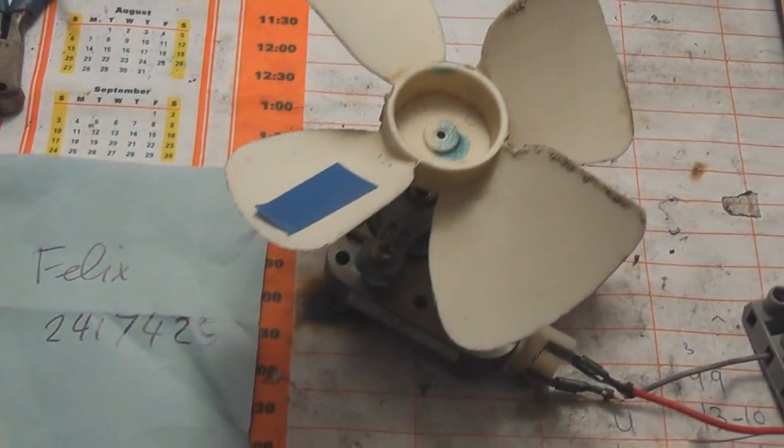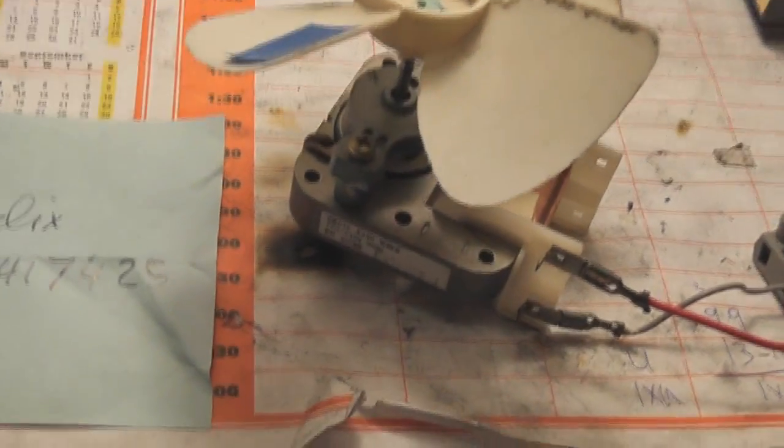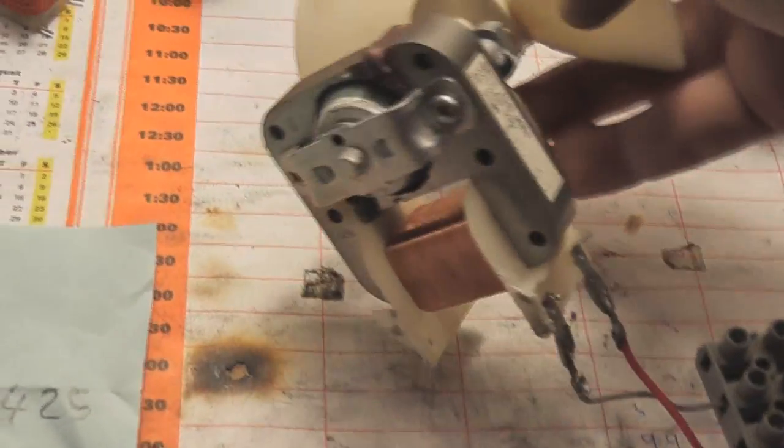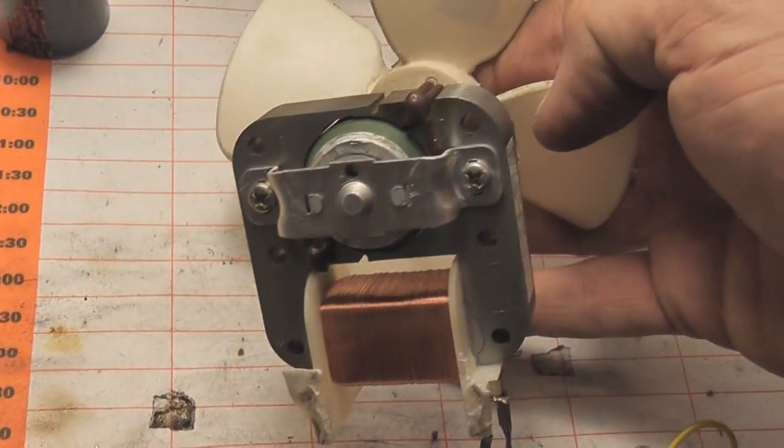This is a normal shaded pole motor, just a cooling fan out of a microwave. Got these copper shorting turns on the side and just an induction coil.